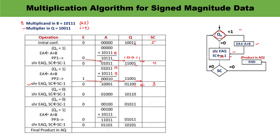We check the value of QN again — now it is 0. Since QN is 0, no addition is done; directly shifting. Only the shift right operation is performed. After shifting, the bit moves to the correct position, the 0 is shifted out, and we get the updated value. The sequence counter is decremented by 1, reaching 2. The process will continue.